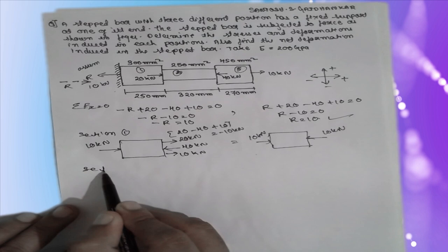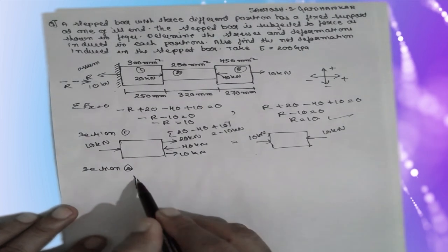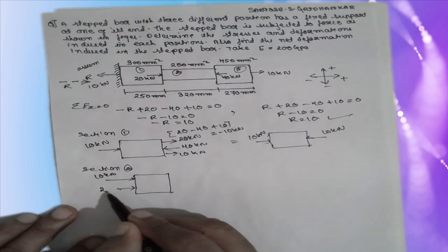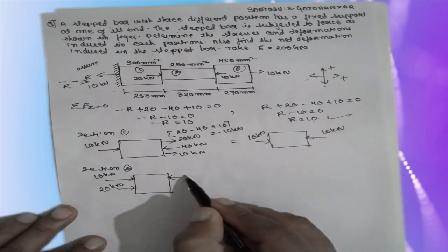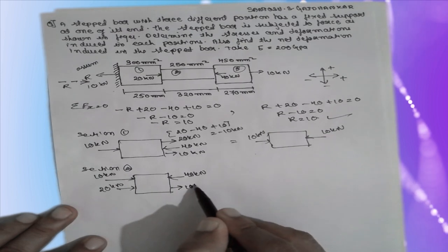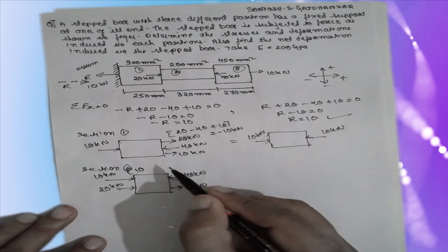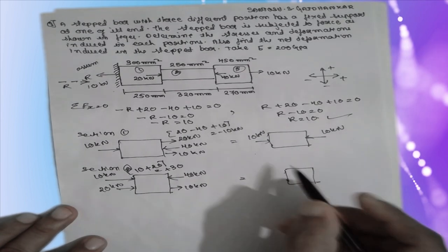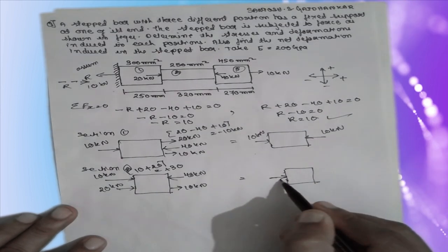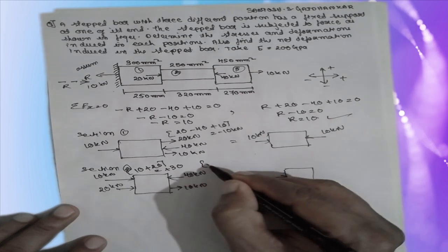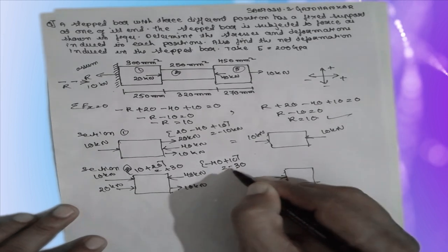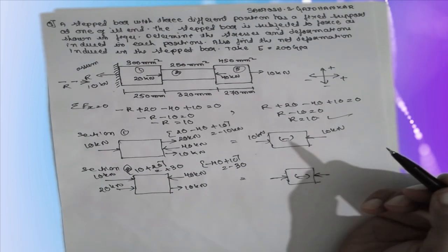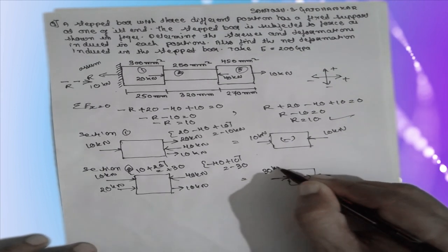For section 2, considering the free body: we have 10 kilo Newton and 20 kilo Newton on one side — that is positive 30 kilo Newton — and minus 40 plus 10 on the other side giving minus 30 kilo Newton. So section 2 carries 30 kilo Newton and it is compressive.